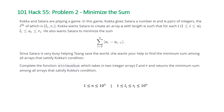Since Sitara is very busy helping Tang save the world, she wants your help to find the minimum sum among all arrays that satisfy Koka's condition. Complete the function minimum sum which takes in two integer arrays l and r and returns the minimum sum. Note that the constraints for this problem are: the length of the arrays is between 1 and 10^5, and the values of the elements are between 1 and 10^9, so integers will suffice.